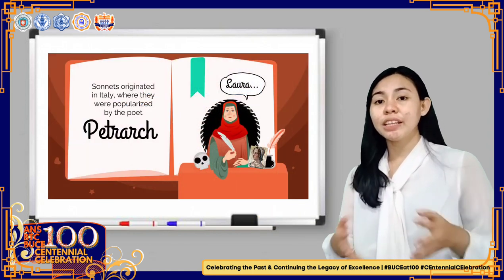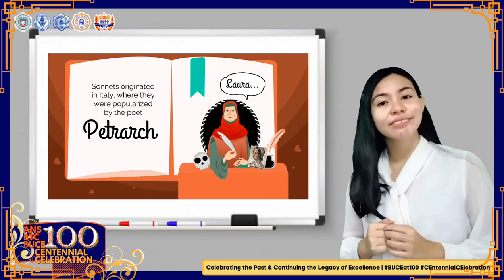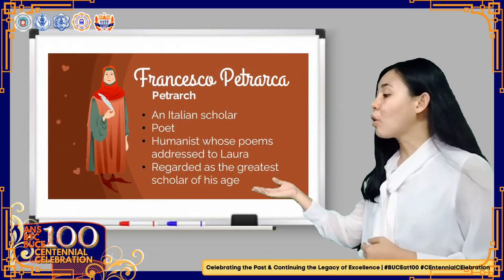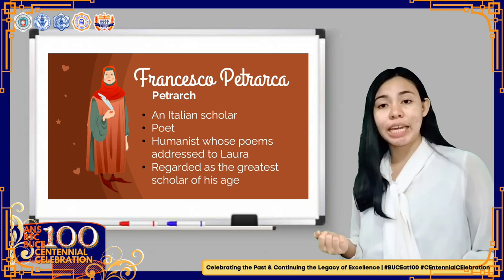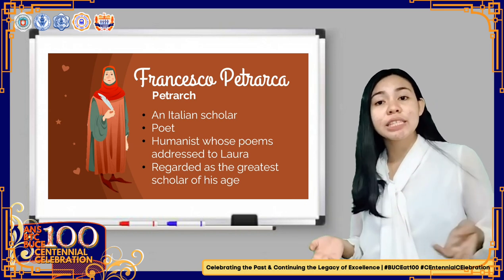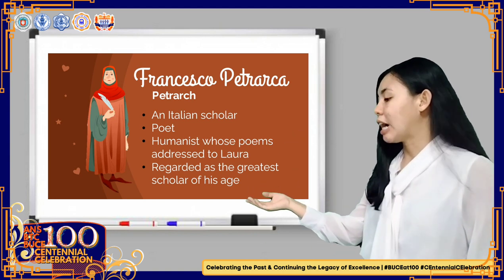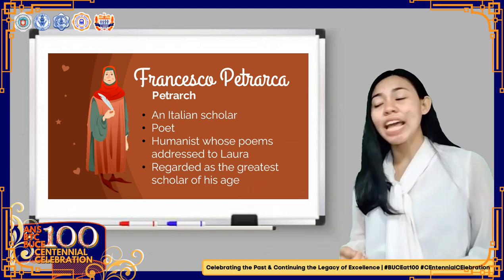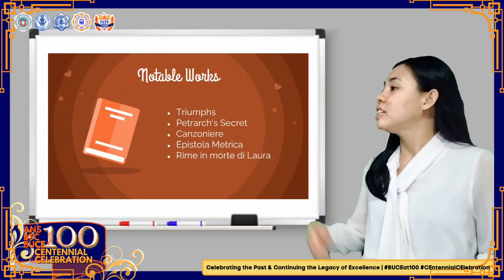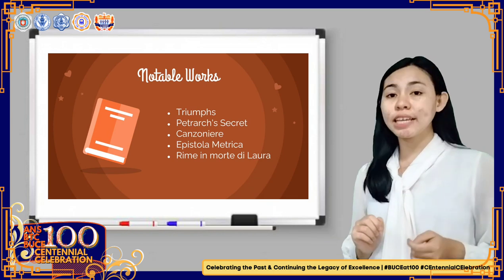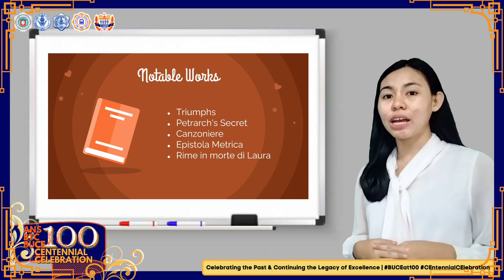Sonnets originated in Italy and were popularized by the poet Petrarch. Francesco Petrarca, or Petrarch, is an Italian scholar, poet, and humanist whose poems are dedicated to Laura — the idealized beloved of Petrarch. Petrarch contributed great literary works, and he was regarded as the greatest scholar of his time. Some of his notable works are Triumphs, Petrarch's Secret, Canzonieri, Epistolae Metricae, and Rime in Morte di Laura.